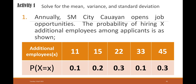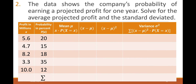For your activity, solve for the mean, variance, and standard deviation for the following: Problem 1 — the probability of hiring additional employees from applicants at MCT Y; Problem 2 — the company's probability of earning projected profit over one year, requiring you to complete the table and solve for the mean, variance, and standard deviation.